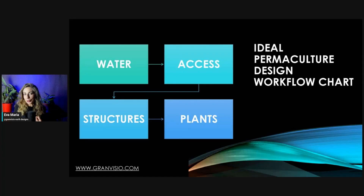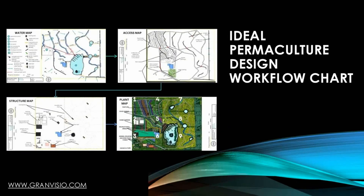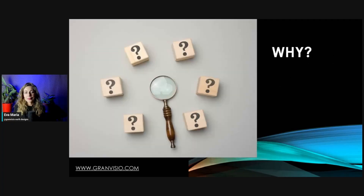When designing a permaculture system, we always start with water and then design other systems around it. Obviously, if there are structures or access already present on site, we try to harmonize water with these elements as much as possible. It can sometimes be tough, but a good permaculture designer can predict certain problems and tell you how to avoid them.